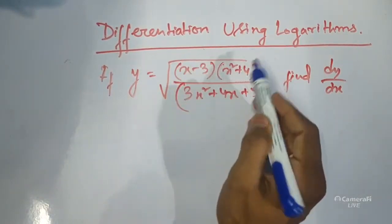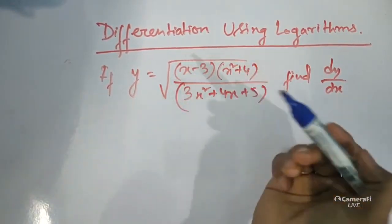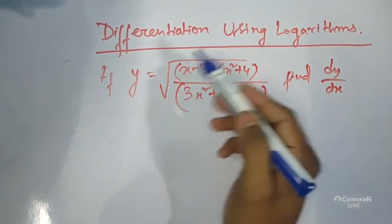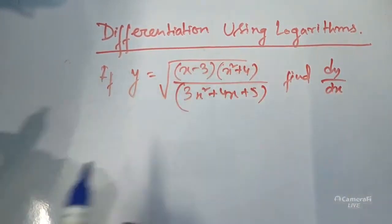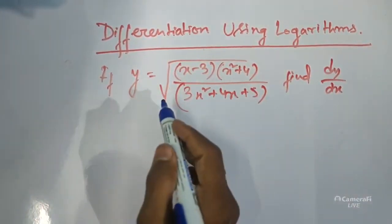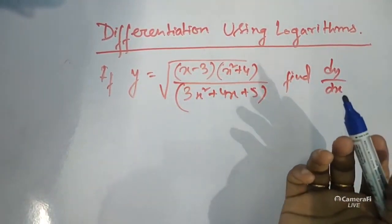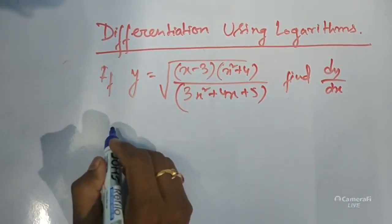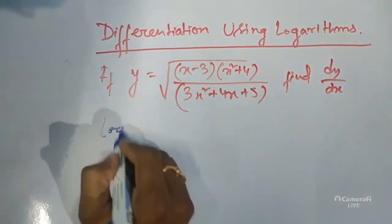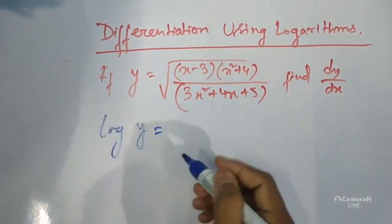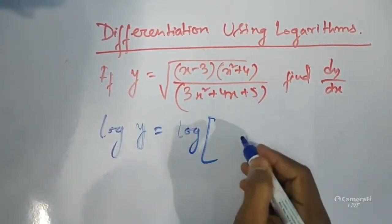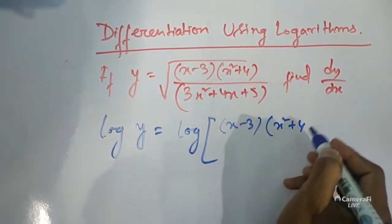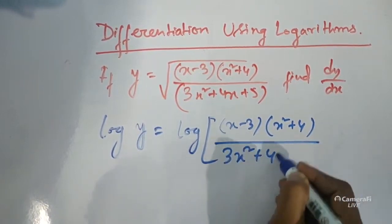You have to find dy/dx. Since this contains a root, and it is in u/v form, if you write the root as a power of half and differentiate in the normal way it will be very lengthy. So in cases where a root or a power like one-fourth or one-fifth is there, it is better to take log both sides. So if we take log both sides, we have: log y equals log of [(x minus 3)(x squared plus 4) / (3x squared plus 4x plus 5)] to the power half.